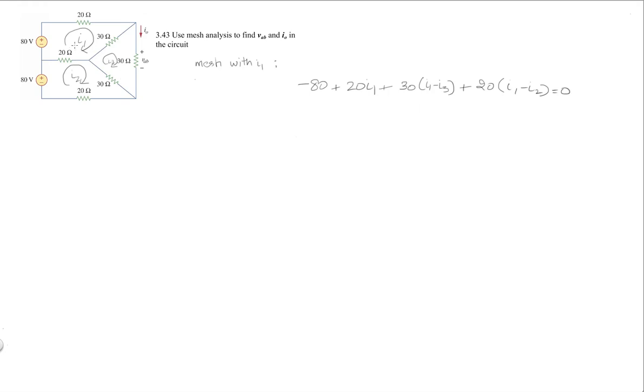So it's 30 times (I1 minus I3) plus the current to this is going to be 20 times (I1 minus I2) equals 0. One of the nice things about working with just independent sources is all the terms, the I1 term, is going to be contributing to each of these resistances. So we could have also written this directly as minus 80 plus 20 plus 30 plus 20, which is 70I1, and then just subtract the other two.